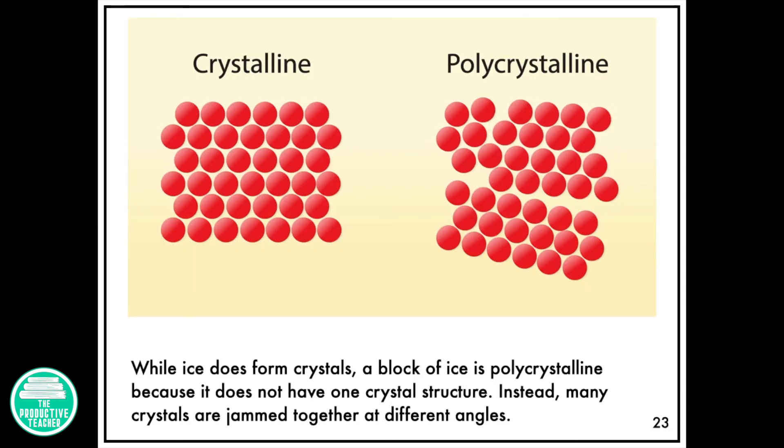While ice does form crystals, a block of ice is polycrystalline because it does not have one crystal structure. Instead, many crystals are jammed together at different angles.